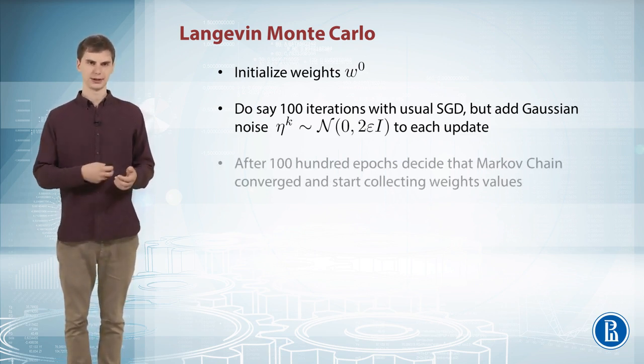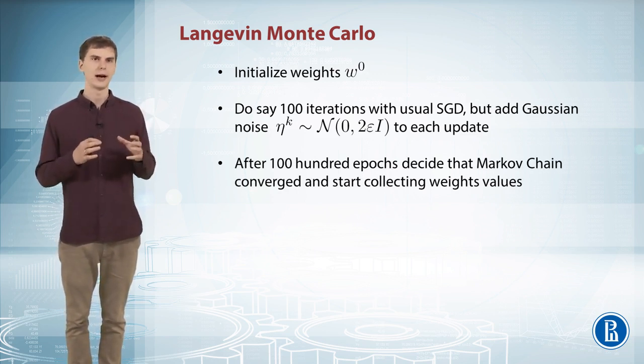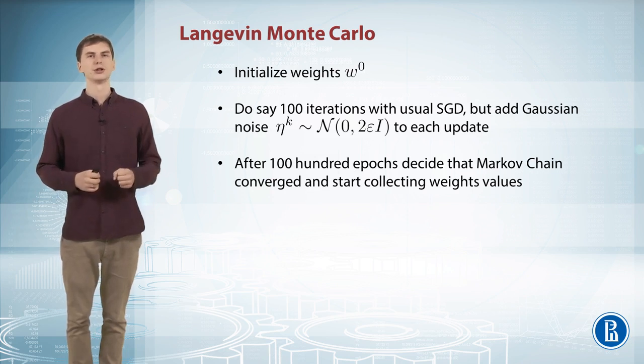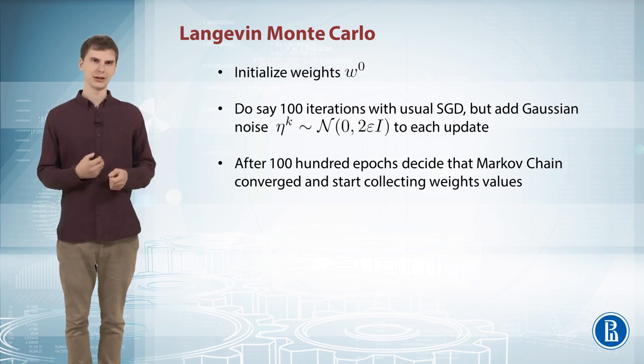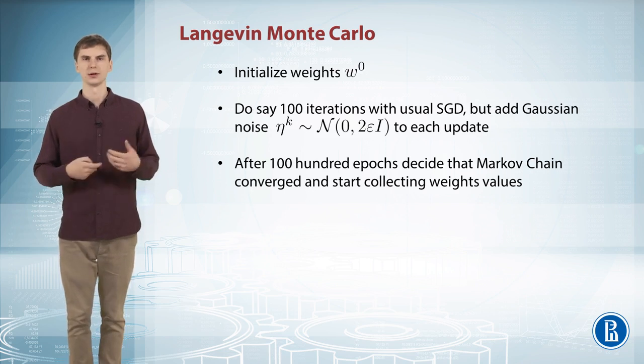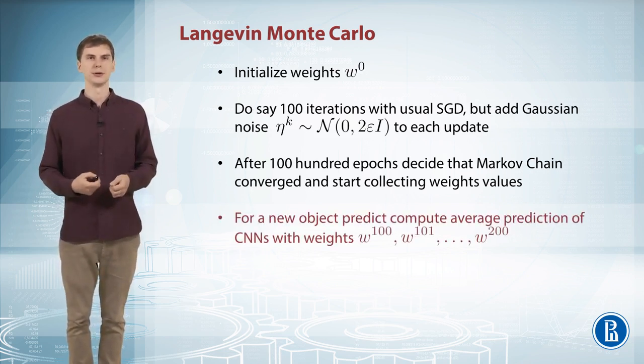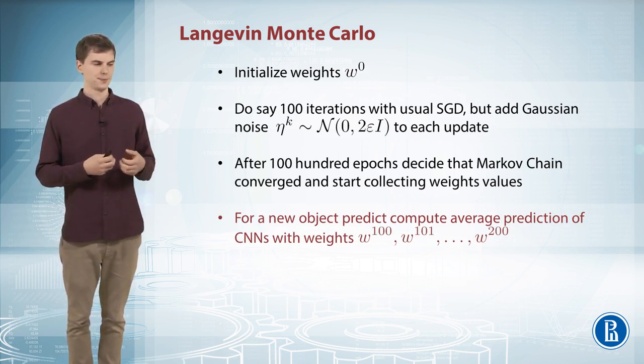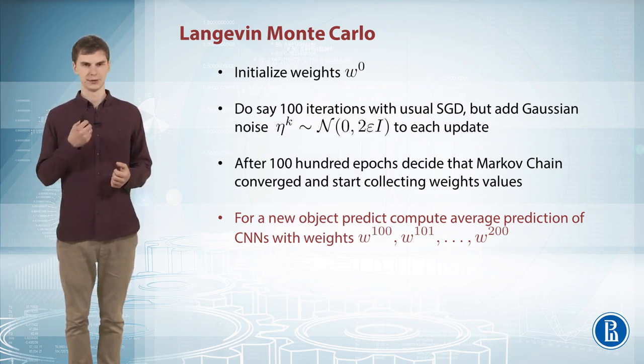And then after doing a few iterations like 100 of them, you may say that okay, I believe that now I have already converged. So let's collect the following samples and use them as actual samples from the posterior distribution. This is the usual idea of Monte Carlo. And then finally for a new point you can just average the predictions of your hundred slightly different neural networks on this new object to get the prediction for your object.